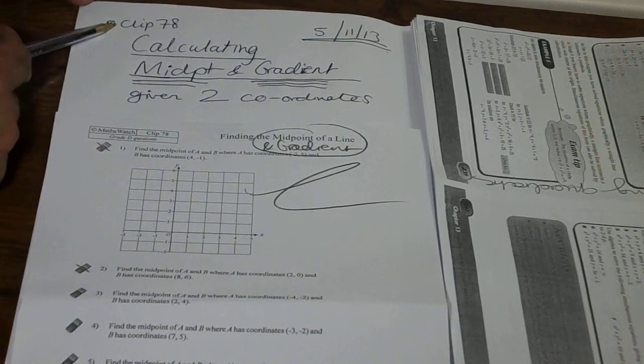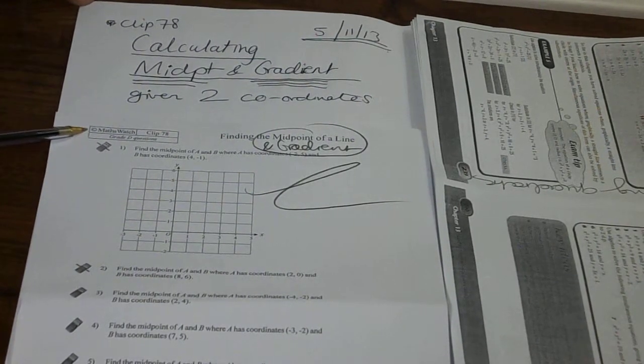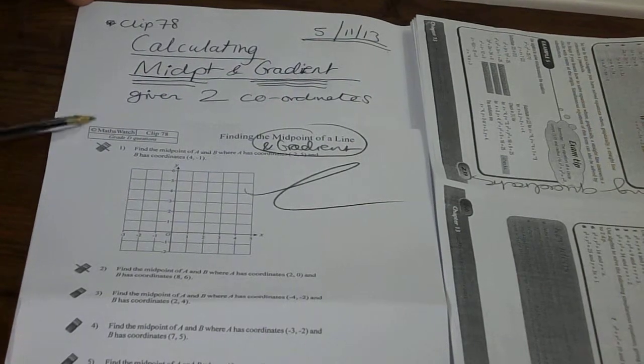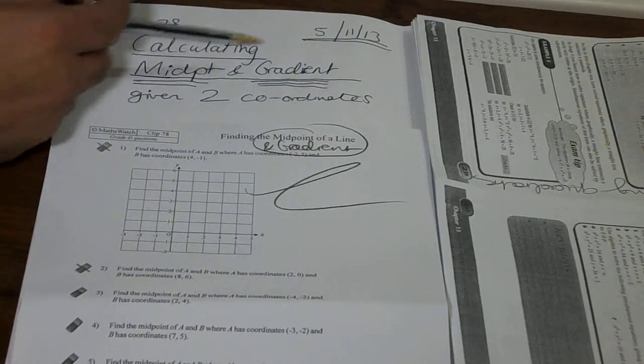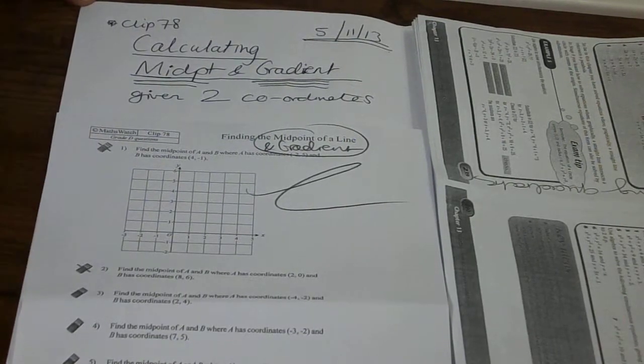Welcome back. We're looking at clip 78 on the grade D math questions. We're looking at calculating the midpoint and I'll also be doing the gradient given two coordinates.